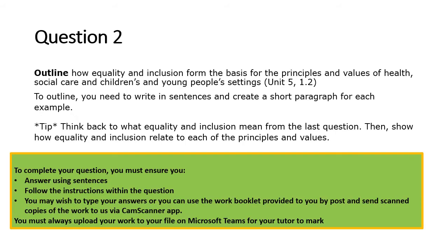This brings you to question two, asking you to outline how equality and inclusion form the basis for the principles and values of health, social care and children and young people's settings. To outline, write in sentences and create a short paragraph for each example. Think back to what equality and inclusion means from question one, then show how they relate to each of the principles and values.